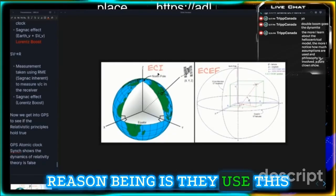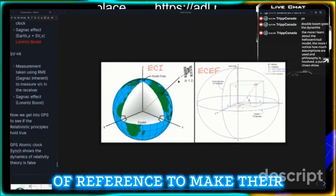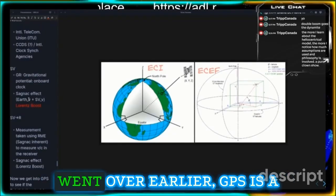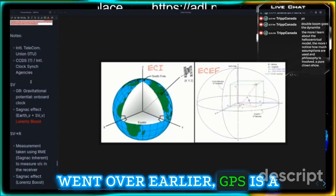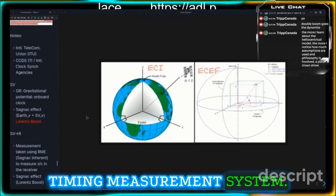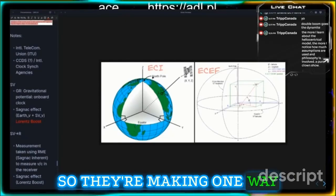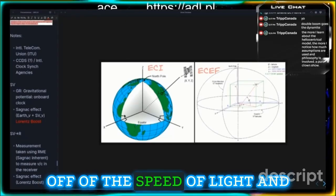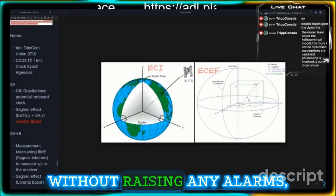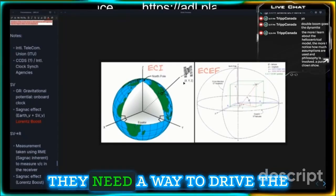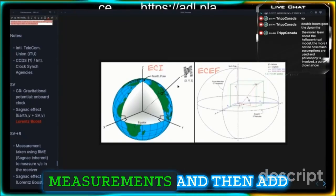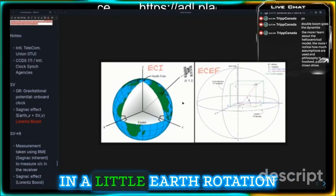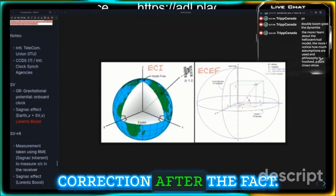They use this frame as an absolute point of reference to make their measurements, because as we went over earlier, GPS is a timing measurement system, so they're making one-way trilateration measurements off of the speed of light and without raising any alarms.